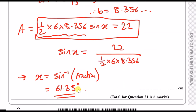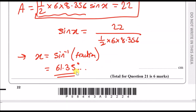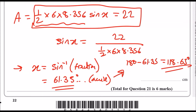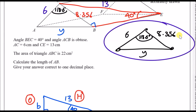However, this is not the final answer, because they told us angle ACB is obtuse — so X must be bigger than 90 degrees. At the moment we have an acute value. To convert to the obtuse form, we subtract from 180: 180 minus 61.35 gives approximately 118.65 degrees. This is the obtuse angle we need. But we're not done yet, because we still need to find the length AB, which is Y — and since we have three lengths and one angle, we must use the cosine rule.